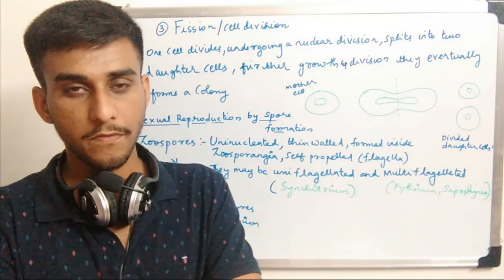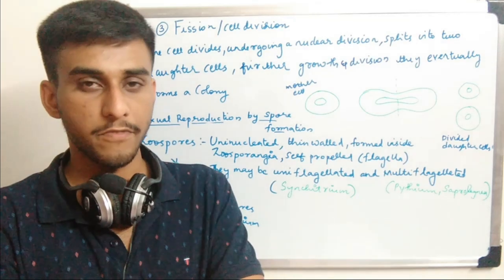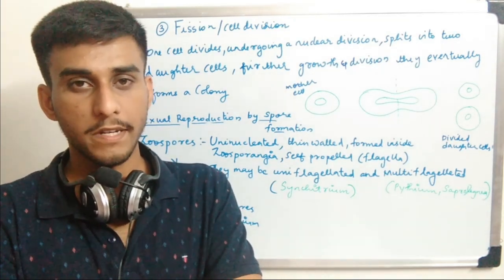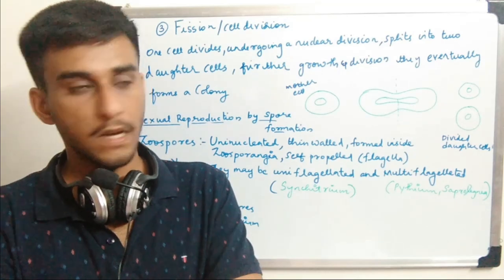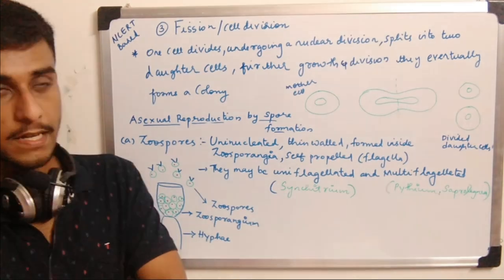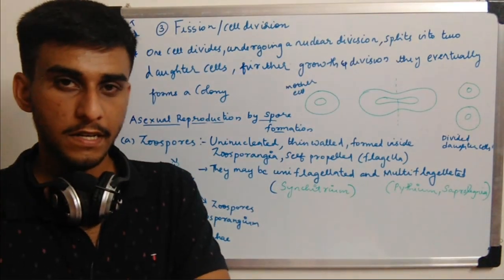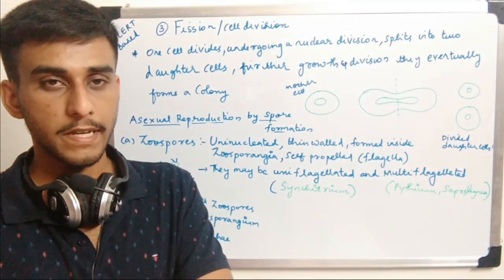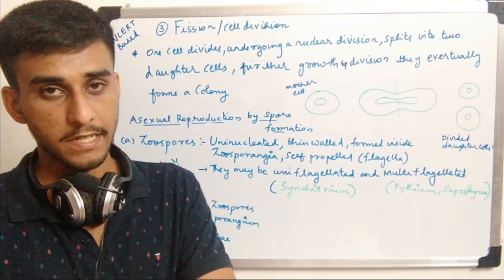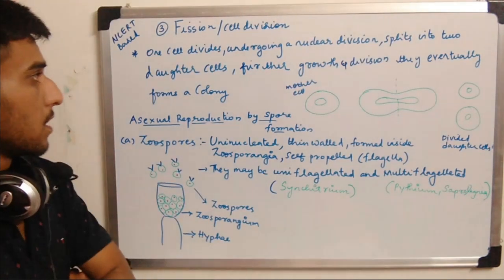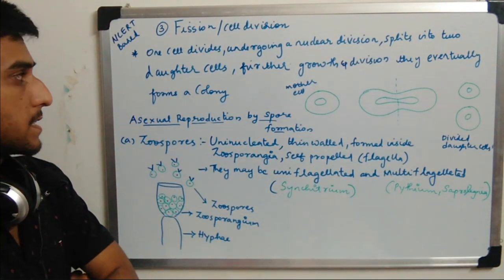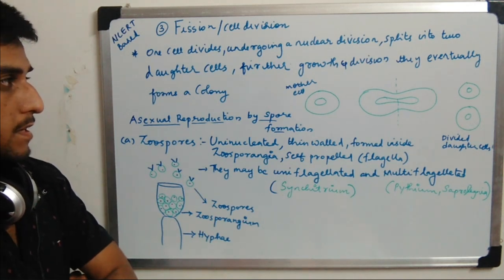The third method of vegetative reproduction done by fungi is fission, also known as cell division. A mother cell undergoes cell division forming daughter cells. The initiation of cell division starts when DNA begins replication — DNA replication is the initial step for fission.